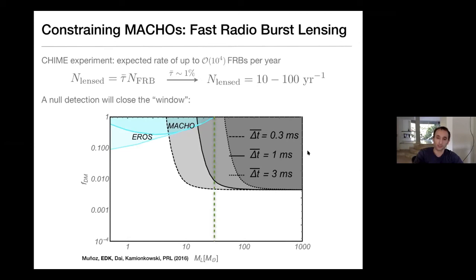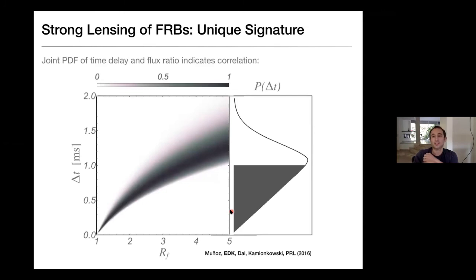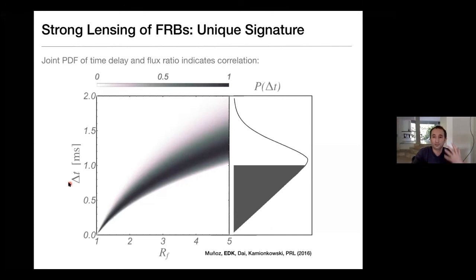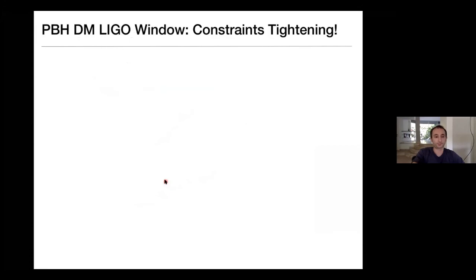This bound should only improve with more fast radio bursts detected. Some fast radio bursts are already observed to repeat, and there's the possibility of repetition not from lensing but from something at the source. However, you can separate repetitions related to lensing from other repetitions — if from lensing, the flux ratio and the time delay are clearly correlated. So if you do see a set of repeating FRBs, you can determine whether that's from lensing or not. This is from the calculation showing what the correlation should be between flux ratio and time delays.